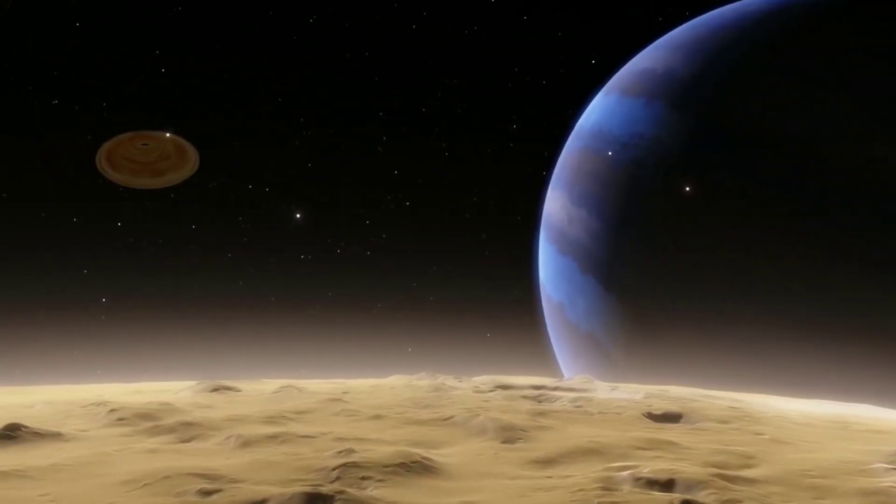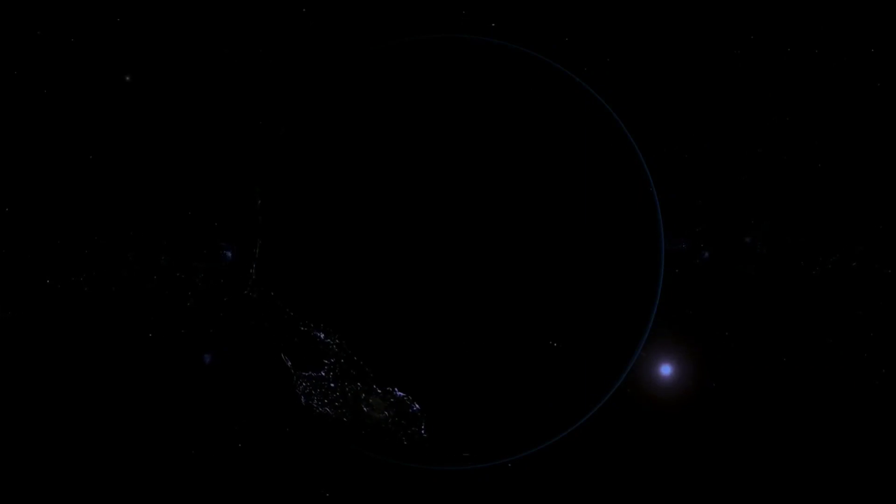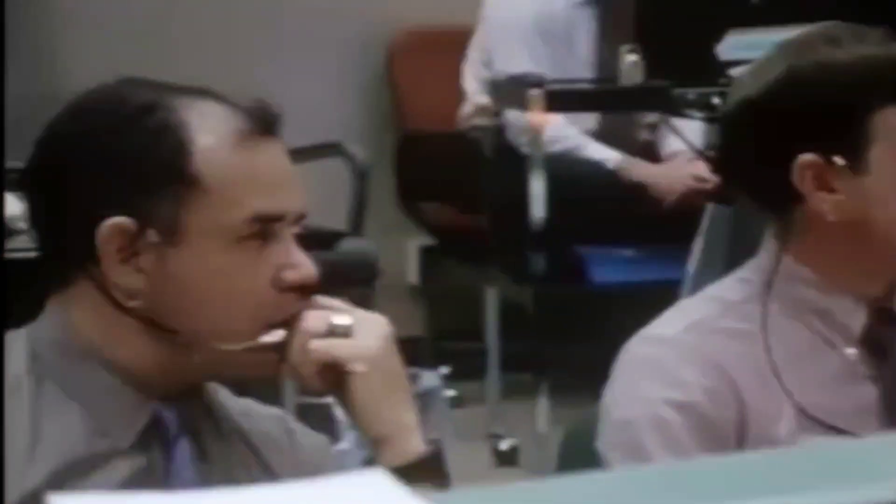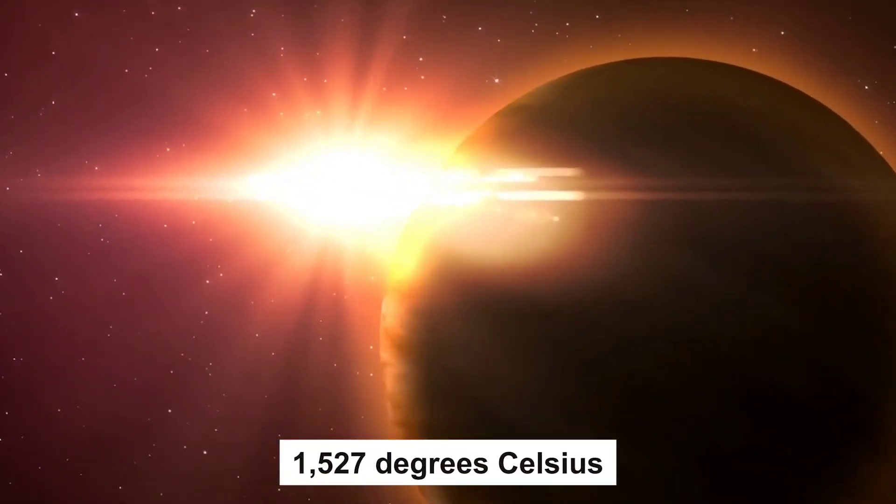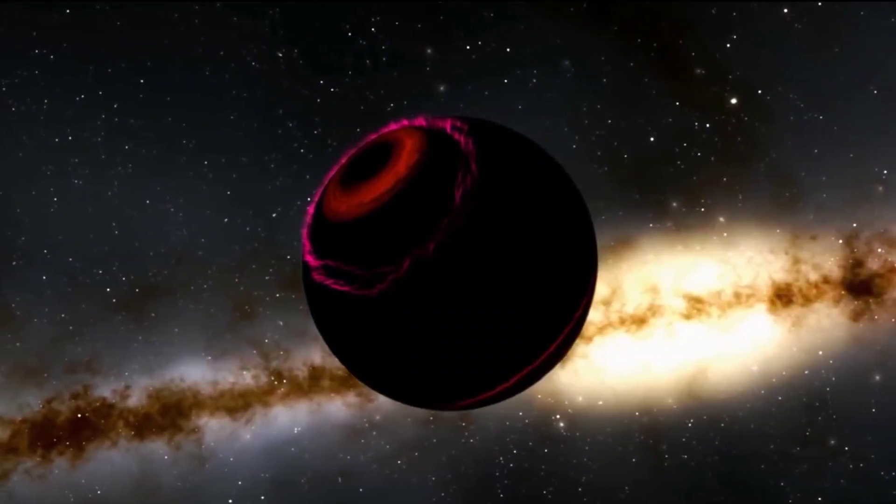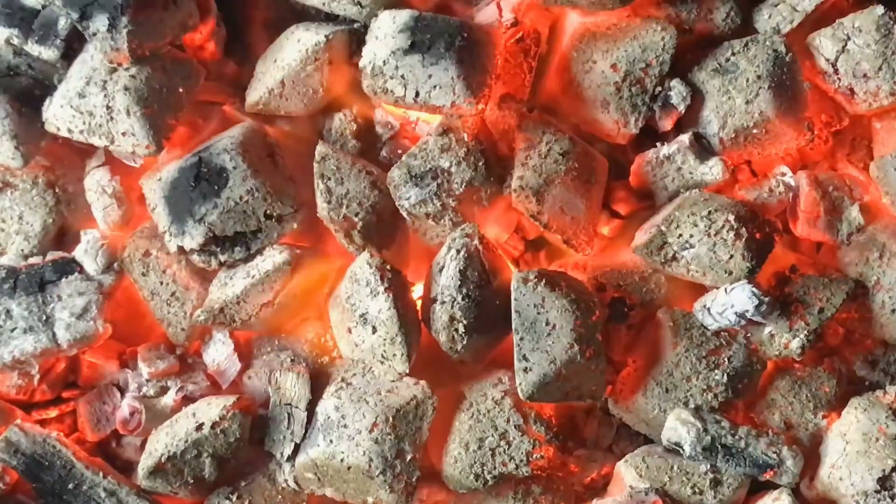TRES-2b orbits its star in just two and a half days, and due to its proximity to the host star, scientists believe that its surface temperature is roughly 1,800 Kelvin, or 1,527 degrees Celsius. It is one of the most fascinating exoplanets yet found. Its estimated temperature is so high that it emits a hazy red glow resembling a lump of burning coal.